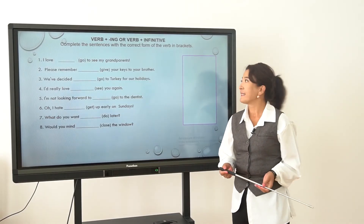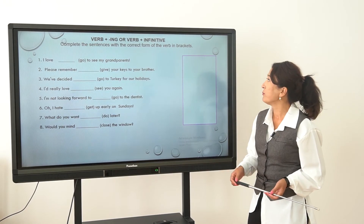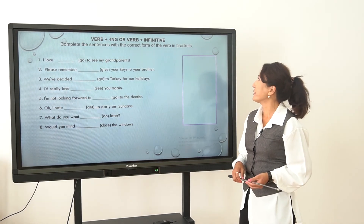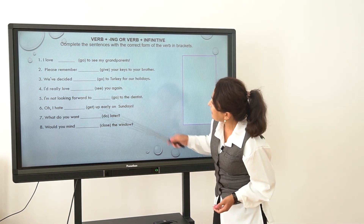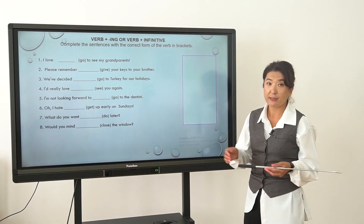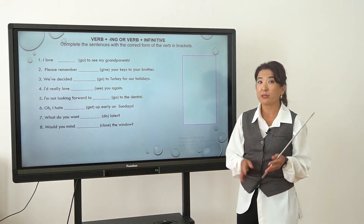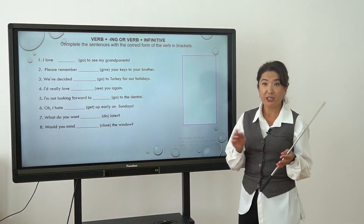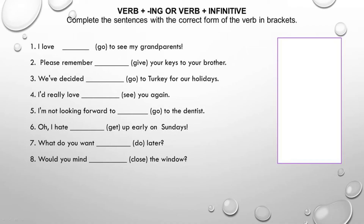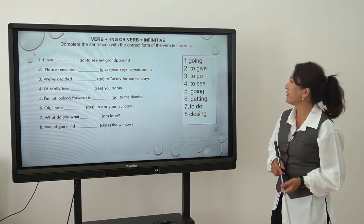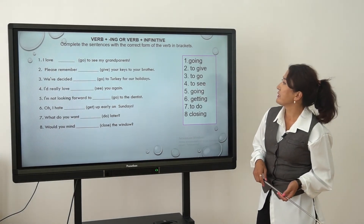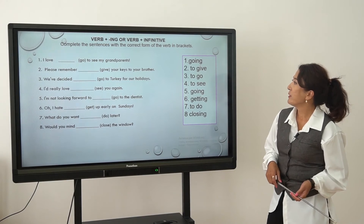A bit of practice. The task is to complete the sentences with the correct form of the verbs in brackets — gerund ING form or infinitive with 'to'. You have eight sentences with verbs in brackets. Let's check. First: I love going to see my grandparents. Second: Please remember to give your kiss to your brother.